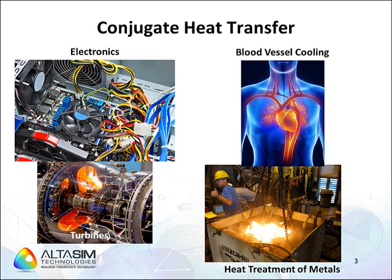For the case we are going to consider in this presentation, quenching of materials from elevated temperatures is often required to develop specific microstructural features that provide prescribed properties. The conjugate heat transfer problem develops between the quenching media, either gas or oil, and the hot metal being quenched. An accurate solution to this problem will improve the mechanical properties of the metal parts.